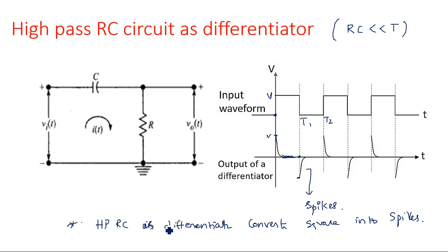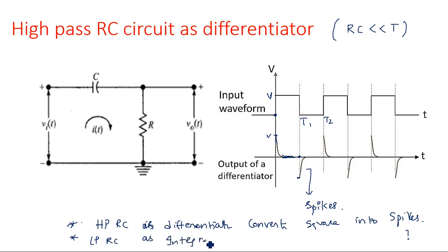A question to consider: when a low pass RC circuit acts as an integrator, how is the square waveform converted? It is converted into a triangular waveform. So low pass RC acts as integrator and converts square wave to triangular waveform, while high pass RC acts as differentiator and converts square wave into spikes. This is because when RC >> T, the capacitor takes a very long time to charge and discharge, producing a triangular output.